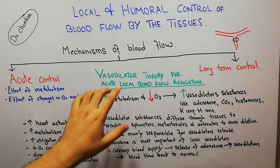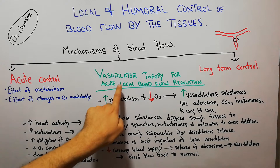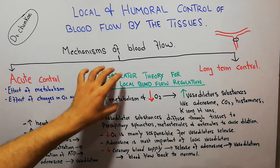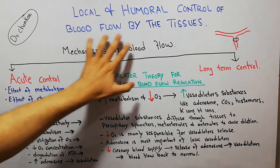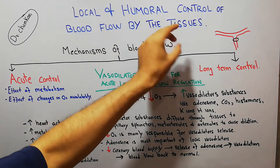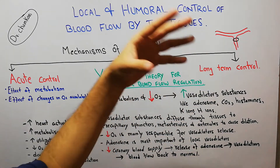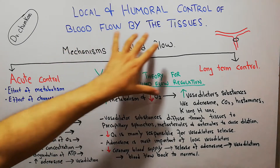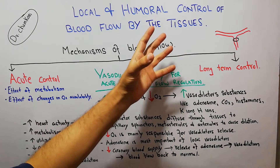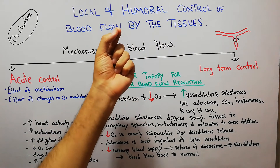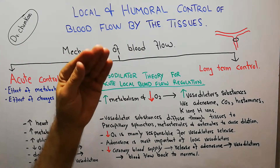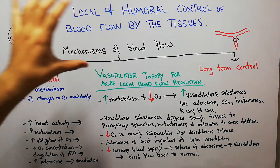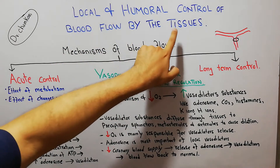Today we are going to discuss the vasodilator theory for acute local blood flow regulation. We are discussing the local and humoral control of blood flow by the tissue — the mechanisms used by the tissues themselves to control the quantity of blood flowing to them. Different organs receive different percentages of blood, and that blood flow increases or decreases according to the needs of the tissue.